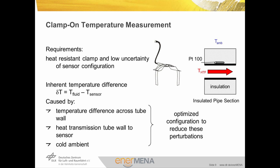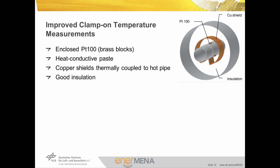In terms of measurement location, pipe sections in the close vicinity of support structures are to be avoided, as such structures are likely to dissipate heat to the surroundings, resulting in reduced and non-representative pipe temperatures. For the improved clamp-on temperature measurements, the PT100s are enclosed in a brass block. The good thermal conductivity of the brass homogenizes the temperature in the close vicinity of the sensor. Metal hose clamps are used to strap the brass block and the sensors to the pipe, which also mechanically protects the sensors from the stress applied to tighten them.